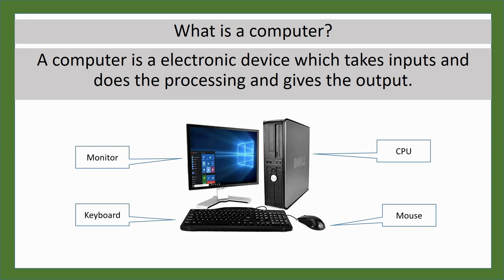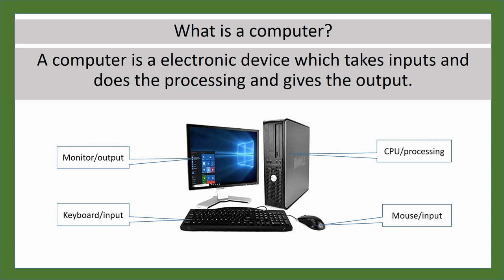The monitor is basically used as an output device. Whatever processing you do, you see the output on the monitor display. Other output devices include the printer. The keyboard is used to give input — we give instructions through the keyboard. The mouse is also an input device; we navigate around the screen and click on things with it. These two devices are called input devices.